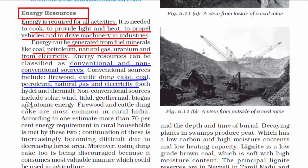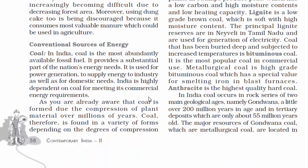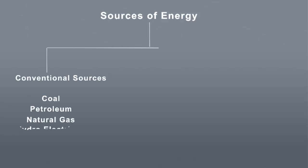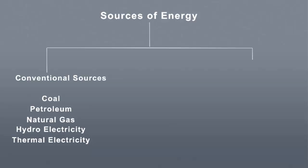Non-conventional sources are modern and new — still not fully deployed — like solar, wind, tidal, geothermal, biogas, and atomic energy. Conventional sources are not eco-friendly; they cause a lot of pollution and damage the environment. Whereas non-conventional sources, though expensive, are totally eco-friendly and sustainable. The cost aspect needs to be tackled so that everyone can make use of them. We will cover all individual sources — coal, petroleum, natural gas, electricity, solar, wind, tidal, geothermal, biogas, and atomic energy — in detail.